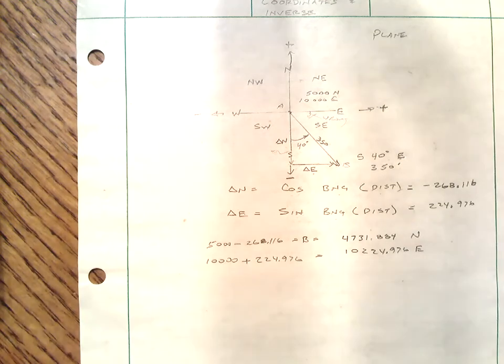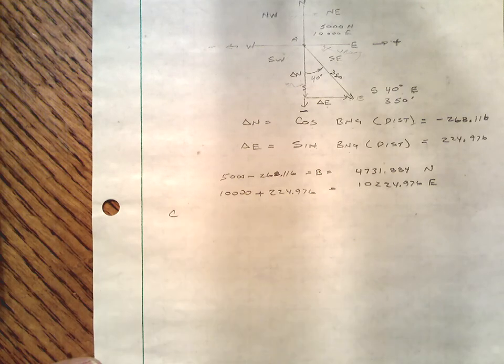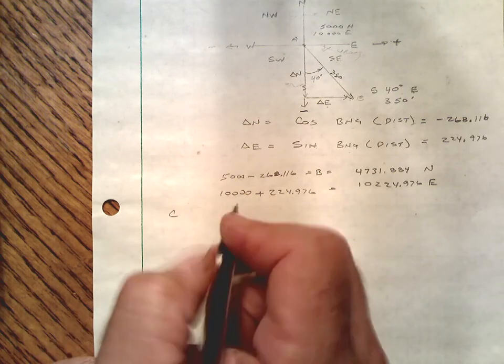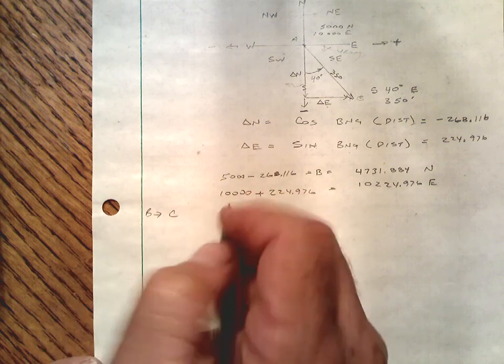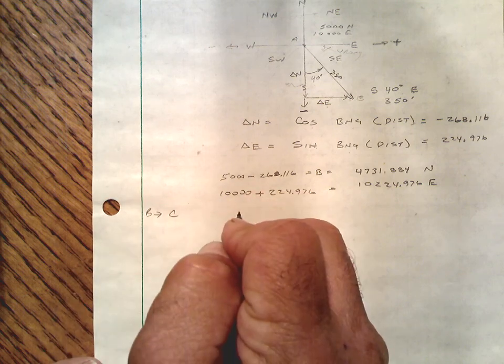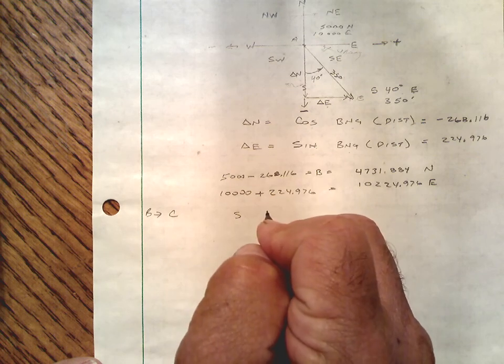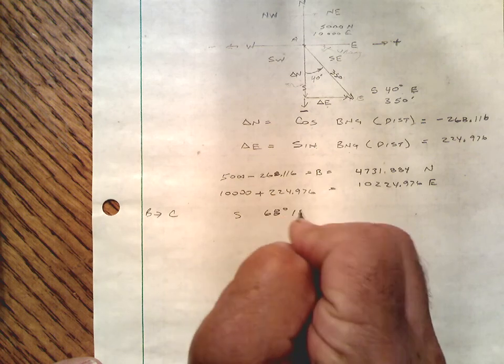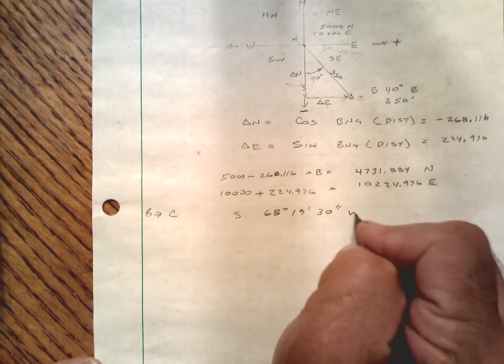Let's do one more and continue on. So if we were going to C and a lot of times you may not have the picture. So if we're going from B to C, we might say that we're going, we'll make one up here. Let's go south 68 degrees 19 minutes and 30 seconds west.